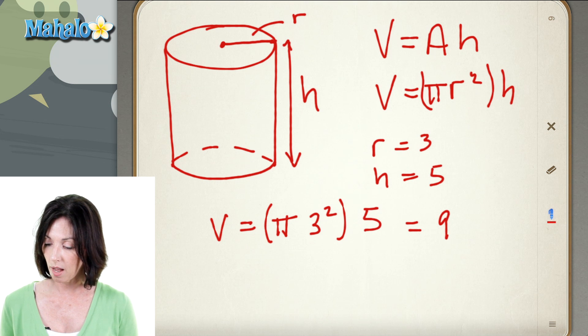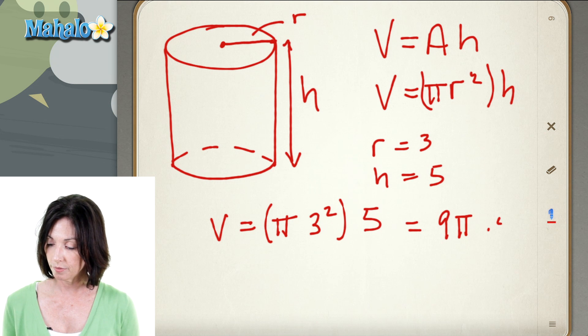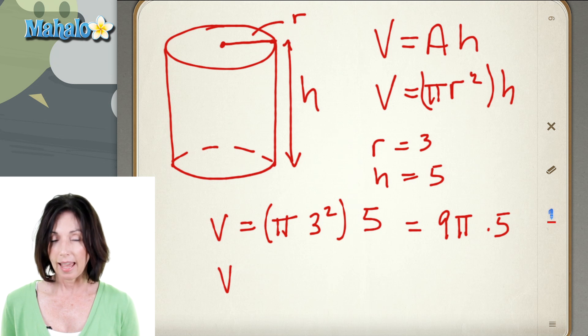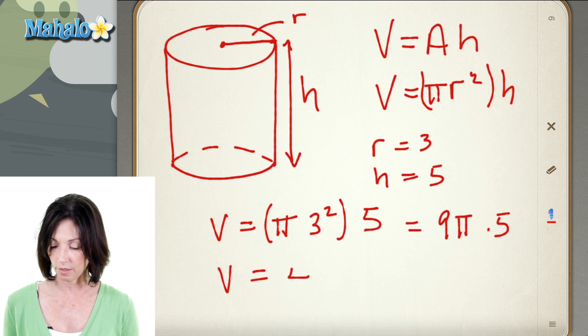so we have nine pi times five, and nine times five is 45, so the volume of the cylinder is 45 pi.